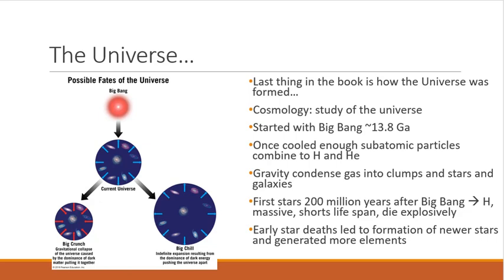Gravity condenses all of that gas down into clumps and stars and galaxies. For the first, stars were forming 200 million years after the Big Bang. These were primarily hydrogen. They were very massive, and they had very short lifespans, talking in the realm of the universe's age. And they would die explosively. And the deaths of those stars led to additional elements being formed. So those early stars' deaths basically became factories for new stars, and they generated more elements to make the universe more vast.